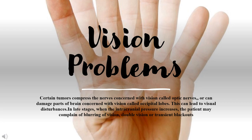Vision problems. Certain tumors compress the nerves concerned with vision called optic nerves, or can damage parts of the brain concerned with vision called occipital lobes. This can lead to visual disturbances. In late stages, when intracranial pressure increases, the patient may complain of blurring of vision, double vision, or transient blackouts.